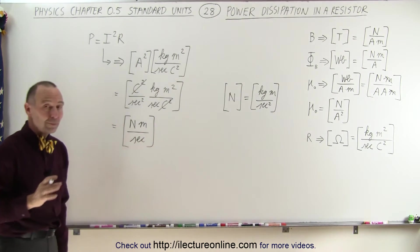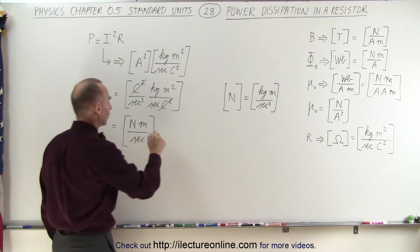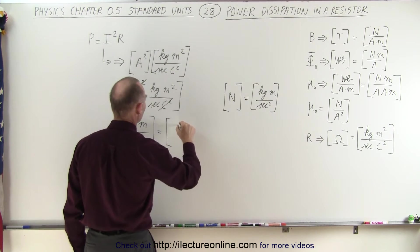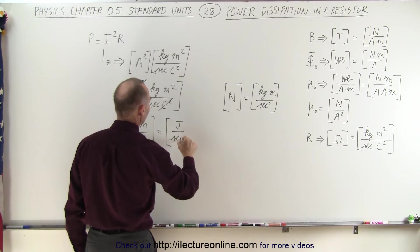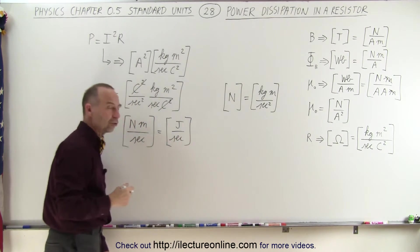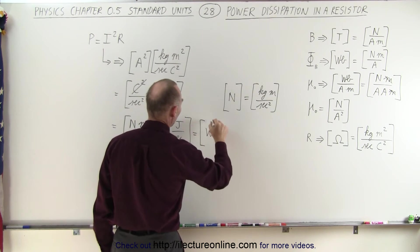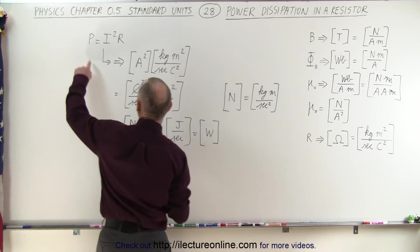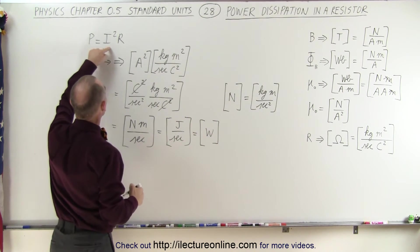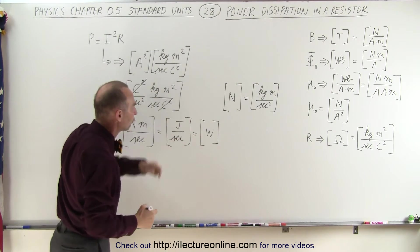Now we realize that a newton meter, that's equal to a joule, so this can be written as a joule per second. And of course that's the definition of a watt. A watt is a joule per second, so this can now be written as a unit of watt, which means we've just shown that the equation power equals I squared R does indeed give us a unit of watt.